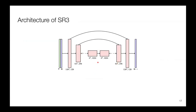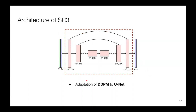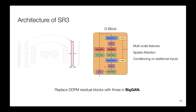SR3 uses the U-Net architecture with some modifications based on the DDPM approach. The first modification was replacing the residual blocks with the blocks from BigGAN, which required rescaling the skip connections by one over the square root of two to stabilize the network. BigGAN is another generative model based on a modified GAN architecture. It has two kinds of residual blocks — the G-block and the D-block — and in this case they used the G-block.